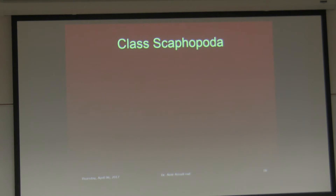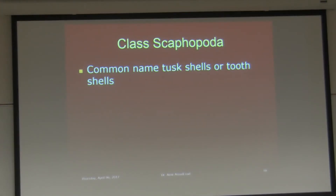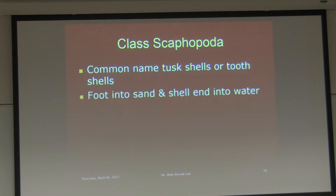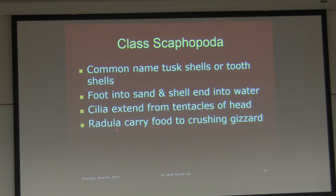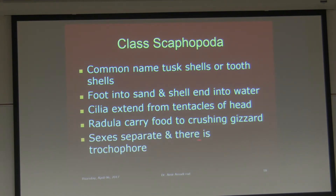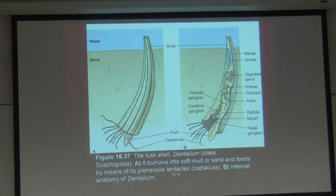The next class — we have to go through some of these quickly because there is not much to be said. The common name is tusk shell or tooth shell for the entire class. Foot goes into the sand, the shell into the water. Cilia extend from tentacles of the head, and the radula carries food to the crushing surface. Sexes are separate, and there is a trochophore larva.